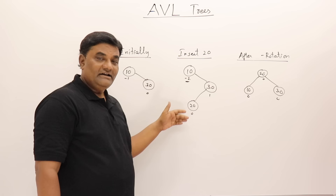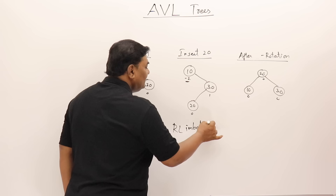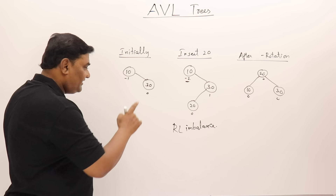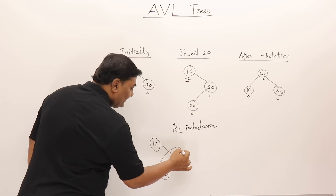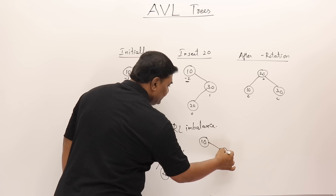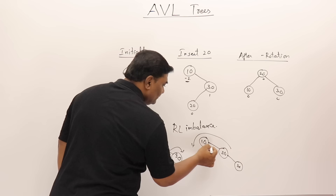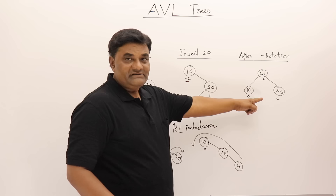Fourth rotation: tree with 10 and 30. Insert 20 — it comes as right child of 10 but left child of 30. Node 10 gets balance factor -2 — imbalanced. Insertion is on right then left — RL imbalance. Double rotation required. This is called RL rotation.